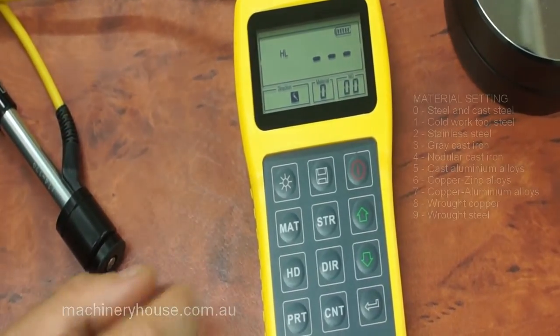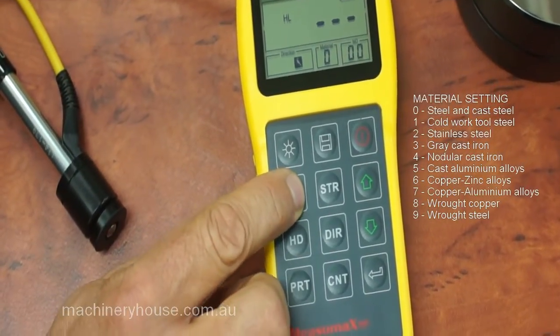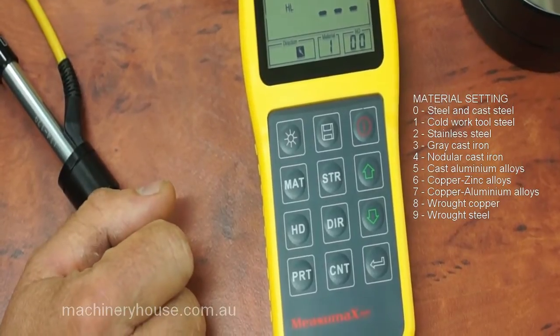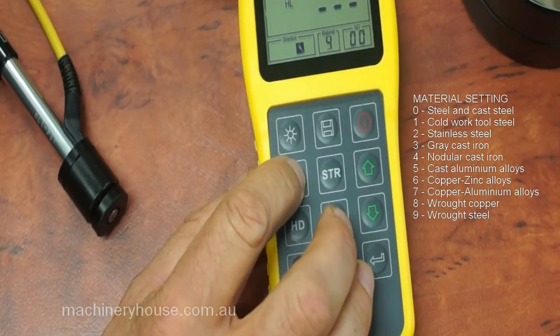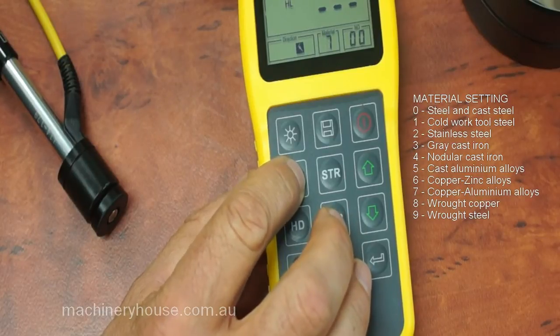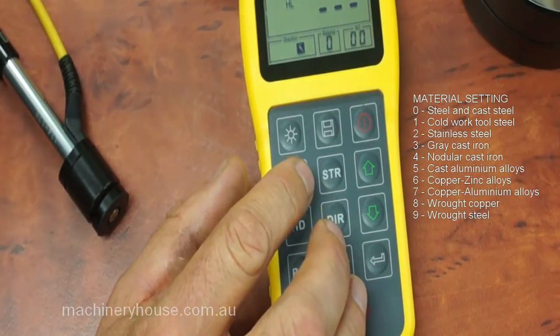Material button. Material setting. Press the mat button, pre-select the material you'll be testing. In this case, we are testing steel.